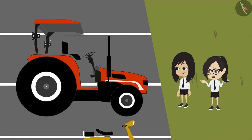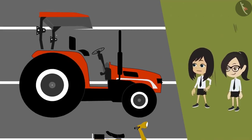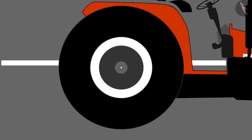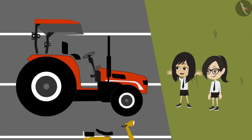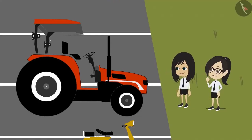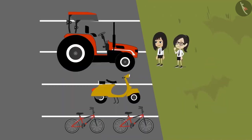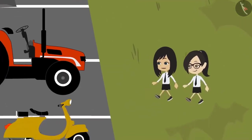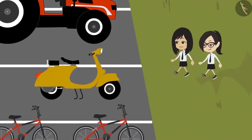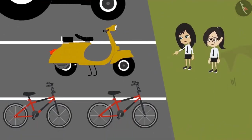What is so shocking then? I am shocked to see its tires. Look, they are almost as big as us. Yes, they are very big. Compared to them, the tires of our bicycles look so small. And look at the tires of the scooter — they are smaller than that of our bicycle.